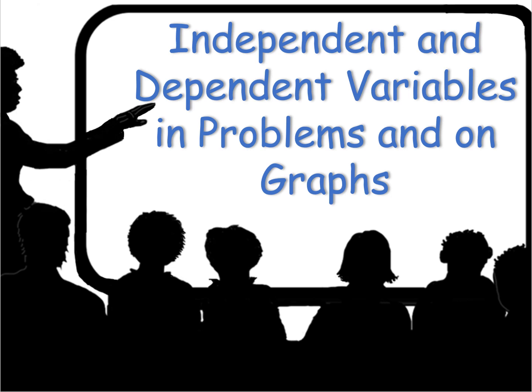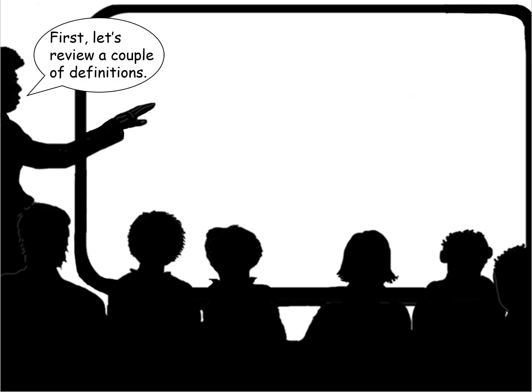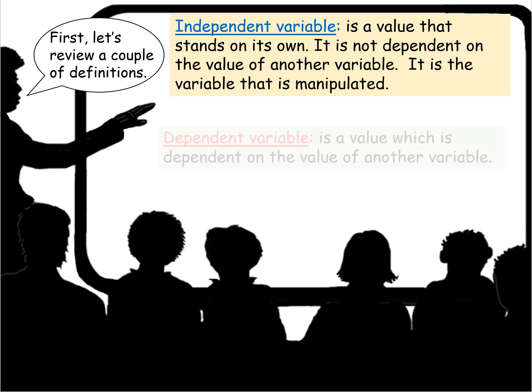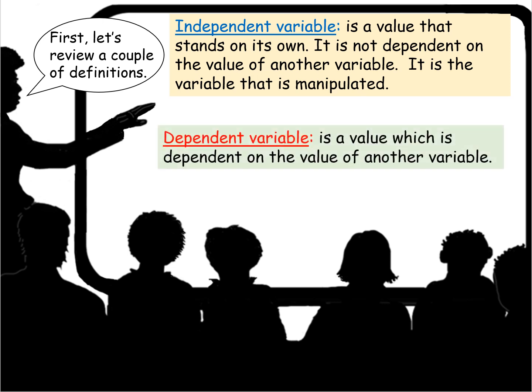We're going to look at independent and dependent variables in problems and on graphs. First, let's review a couple of definitions. An independent variable is a value that stands on its own — it is not dependent on the value of another variable. It is the variable that is manipulated.